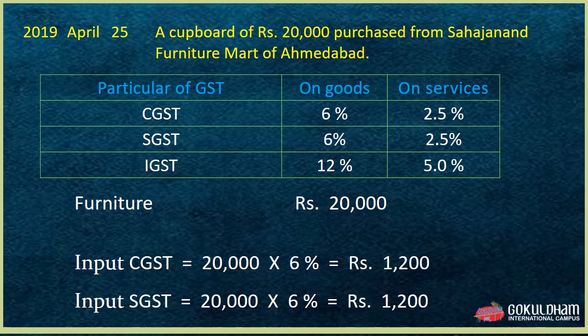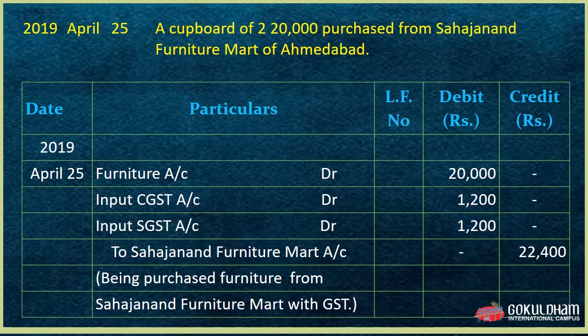Next transaction: Furniture of ₹20,000 purchased from Sahajanan Furniture Mart, Ahmedabad — intra-state transaction. Input CGST and Input SGST at 6% each apply. CGST = ₹1,200; SGST = ₹1,200. Journal entry: Furniture Account debit ₹20,000, Input CGST debit ₹1,200, Input SGST debit ₹1,200, To Sahajanan Furniture Mart Account ₹22,400. Narration: Purchased furniture from Sahajanan Furniture Mart with GST.